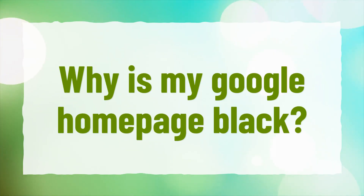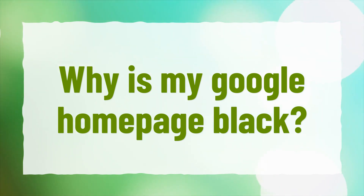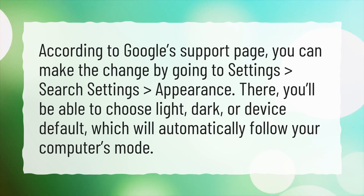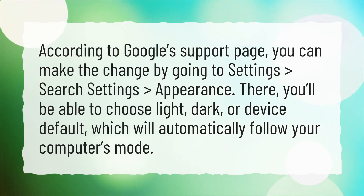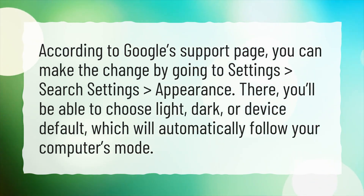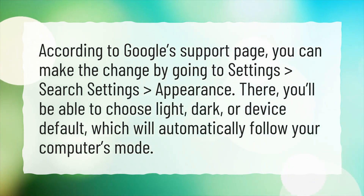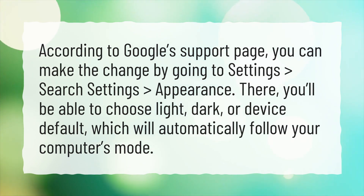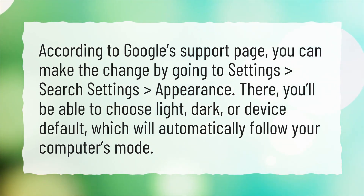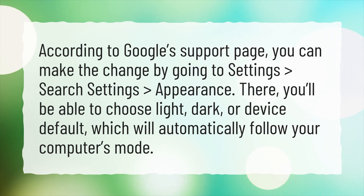Why is my Google homepage black? According to Google's Support page, you can make the change by going to Settings, Search Settings, then Appearance. There, you'll be able to choose Light, Dark, or Device Default, which will automatically follow your computer's mode.